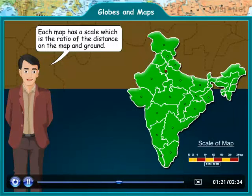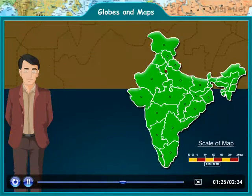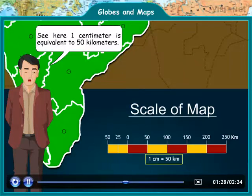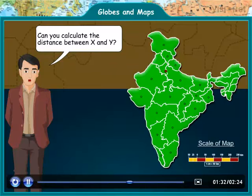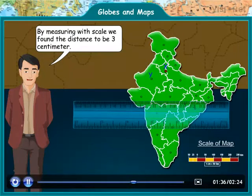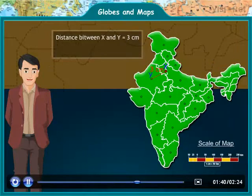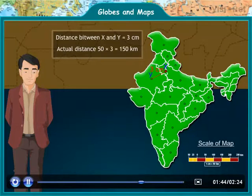Each map has a scale which is the ratio of the distance on the map and the ground. See here, 1 centimeter is equivalent to 50 kilometers. Can you calculate the distance between X and Y? By measuring with a scale, we found the distance to be 3 centimeters. Therefore, the actual distance is 50 into 3, which is equal to 150 kilometers.